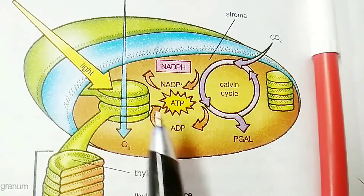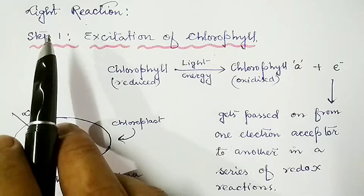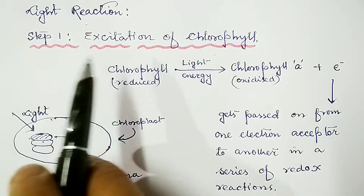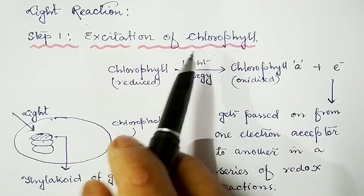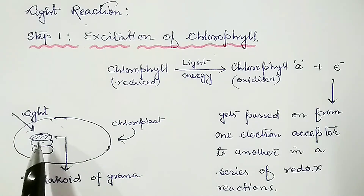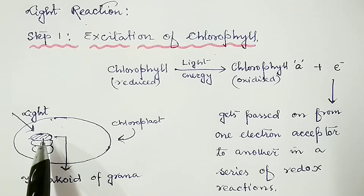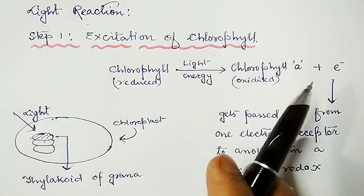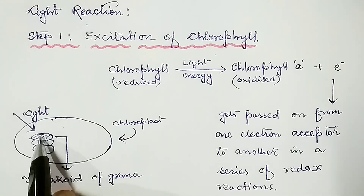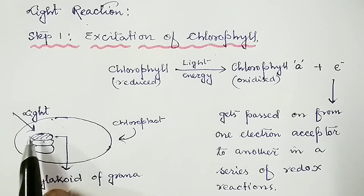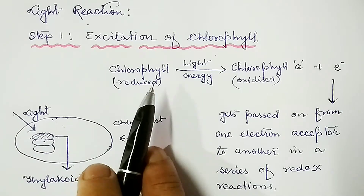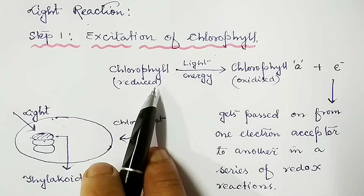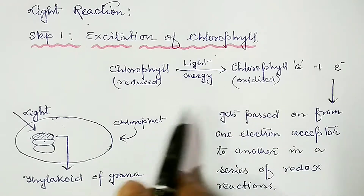Now I am going to discuss the main steps that take place in the light reaction. In the light reaction, the first step is excitation of chlorophyll. Light energy is absorbed by the chlorophyll in the form of photons, and this chlorophyll attains a higher energy state. Once it is in the excited state, it will release an electron, and this electron will then move from one electron acceptor to another in a series of oxidation-reduction reactions. So after being exposed to light energy, the chlorophyll molecules are excited and they release electrons.